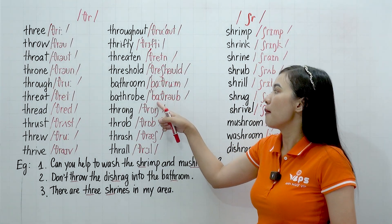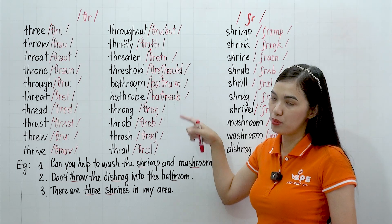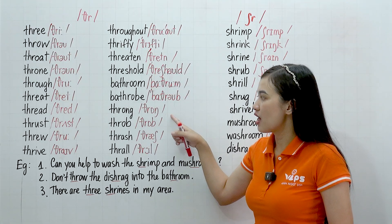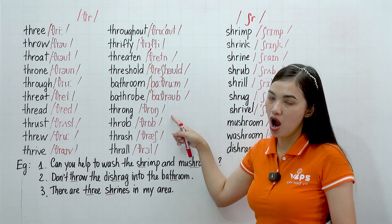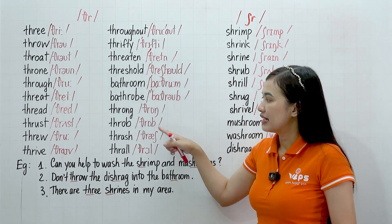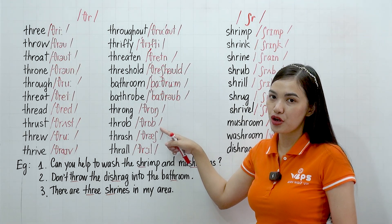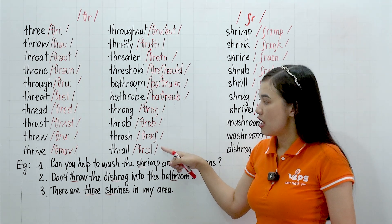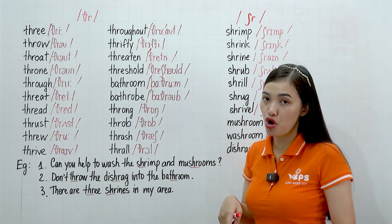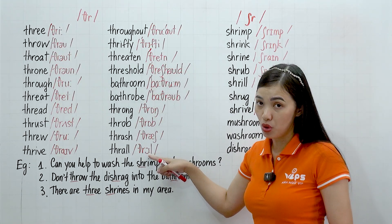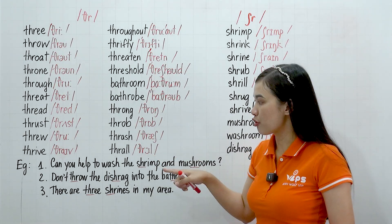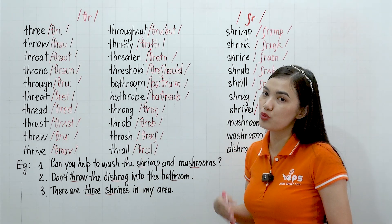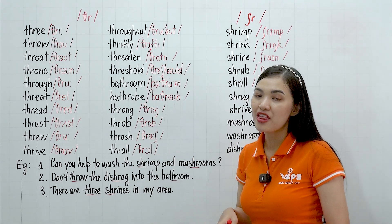This one — bathrobe, bathrobe, bathrobe. This — throng, throng. This one — throb, throb. This — thrash, thrash. And the last one — thrall. This is the long 'or' sound. So thrall — remember, when A with L, we usually pronounce the long 'or' sound: thrall.